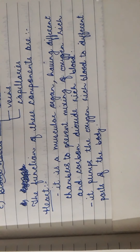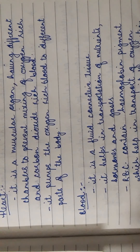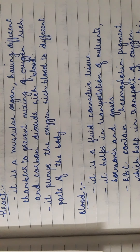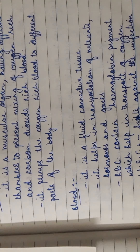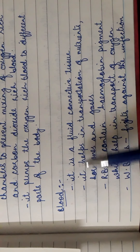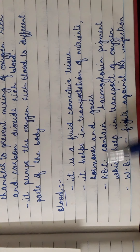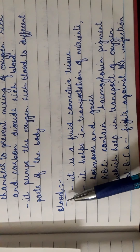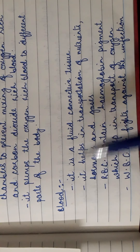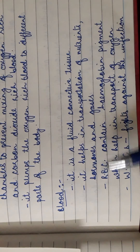Our next component is blood. As mentioned, blood has various components: RBC, WBC, platelets, and plasma. Blood is a fluid connective tissue. It helps in the transportation of nutrients, hormones, and gases. First we need to state that blood is a fluid connective tissue that helps in transportation of nutrients, hormones, and gases.